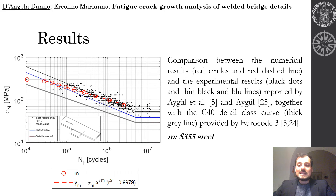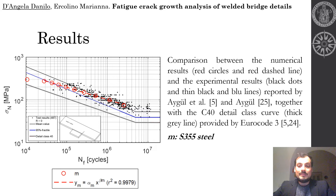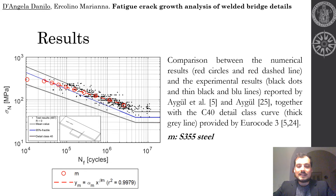In this slide you can see a comparison between the numerical results, which are represented through red circles and the red dashed line, and experimental data depicted by black dots and thin lines. You can also see the detail class C40 according to Eurocode 3.